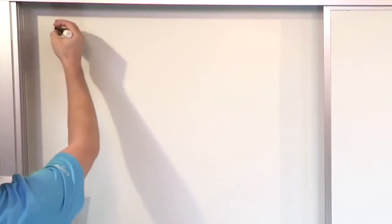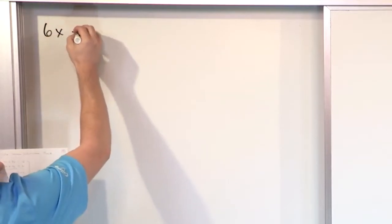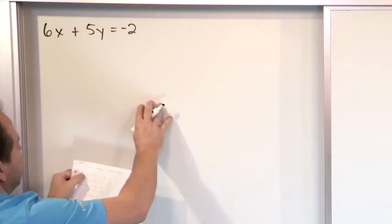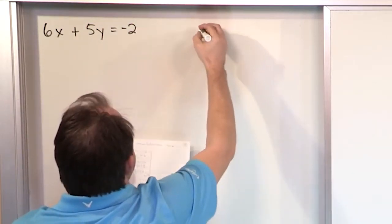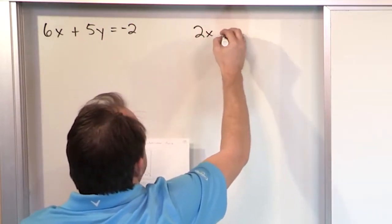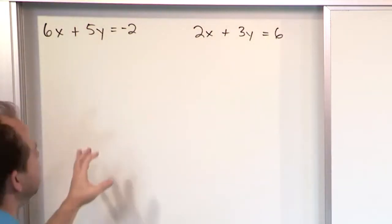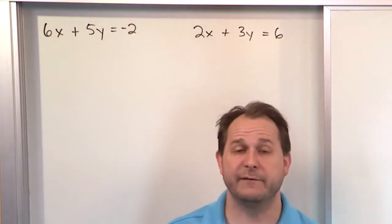So let's take a look at the system of equations and see how we would solve it. What if the system was 6x plus 5 times y equals negative 2? That's equation number 1. And the other part of the system is 2x plus 3y is equal to 6. So what I'm going to do actually is I'm going to solve this system of equations